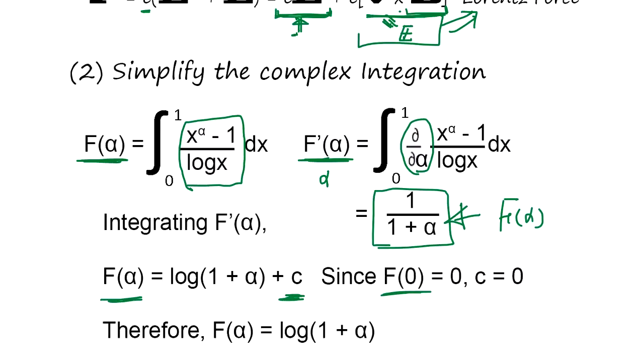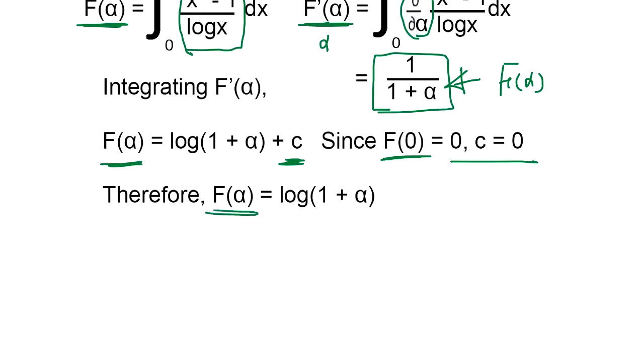If it's F zero, this is zero. So, it's zero. It's going to be zero. So, therefore, F alpha is log one plus alpha.